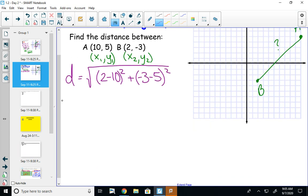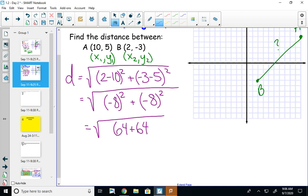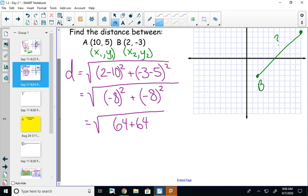Remember your order of operations. I'm going to do the thing in parentheses first. So my first parentheses has 2 minus 10. 2 minus 10 is going to be -8. My other parentheses have -3 minus 5. You could also think of that as plus -5. Either way, it's going to be -8. So parentheses are taken care of. Then I'm going to do exponents. -8 squared would be positive 64 because that means -8 times -8. So I've got 64 plus 64, which would be 128.